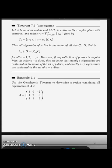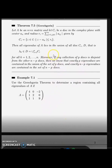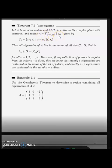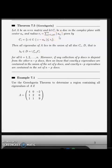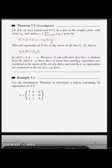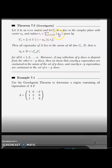We learn the Gershgorin theorem because we want to find the region of the eigenvalues. To get the region, we need to know the radius R_i, which is the summation of |a_ij| where i is not equal to j — meaning the off-diagonal elements. The region is defined as |z minus a_ii| less than R_i, and R_i is the summation of |a_ij|, so the region must be within the radius.